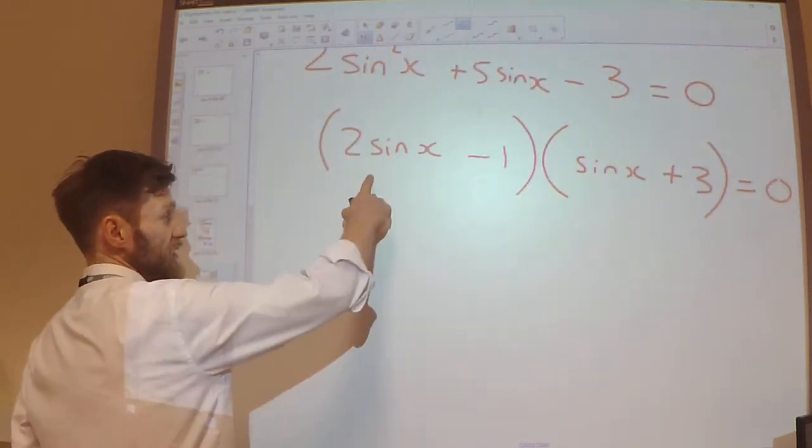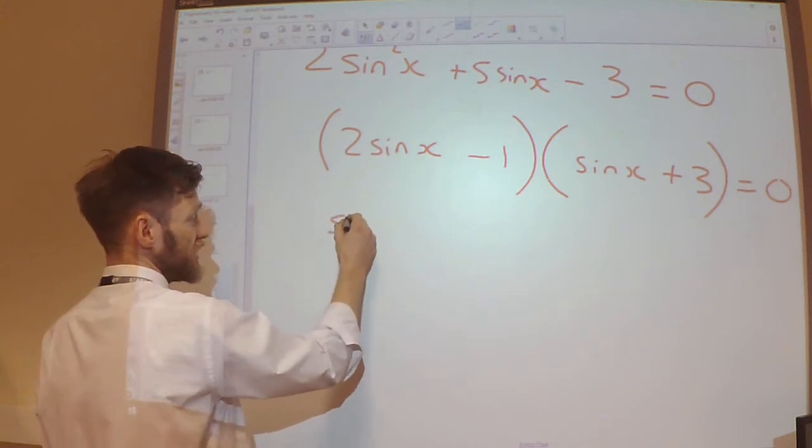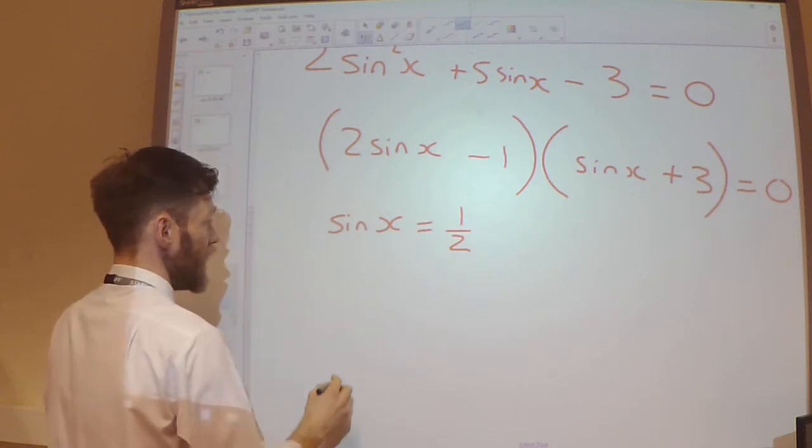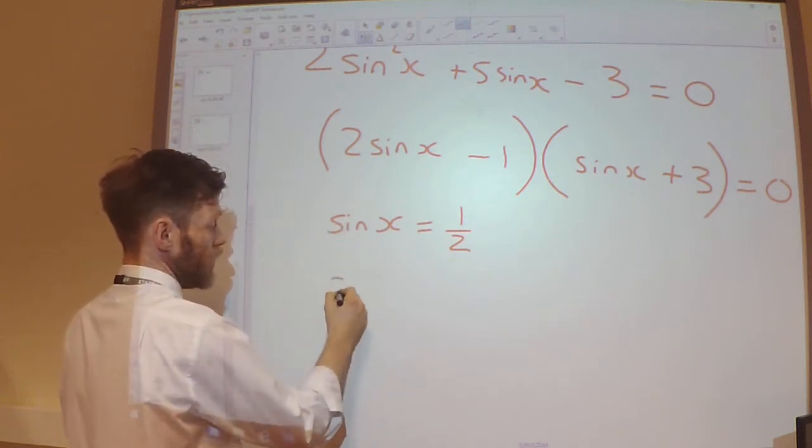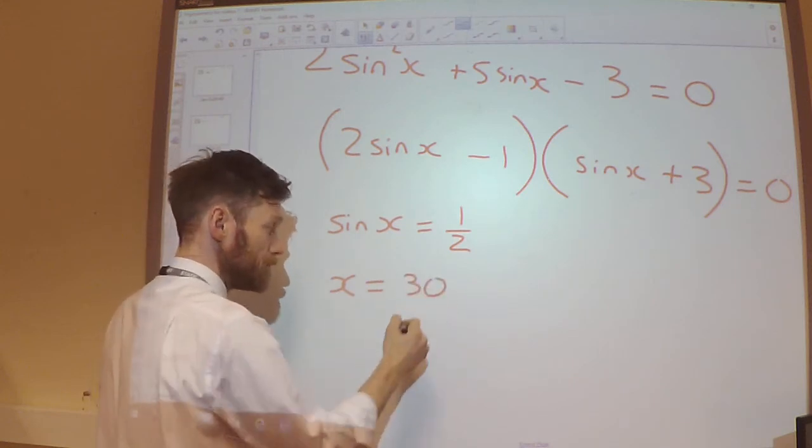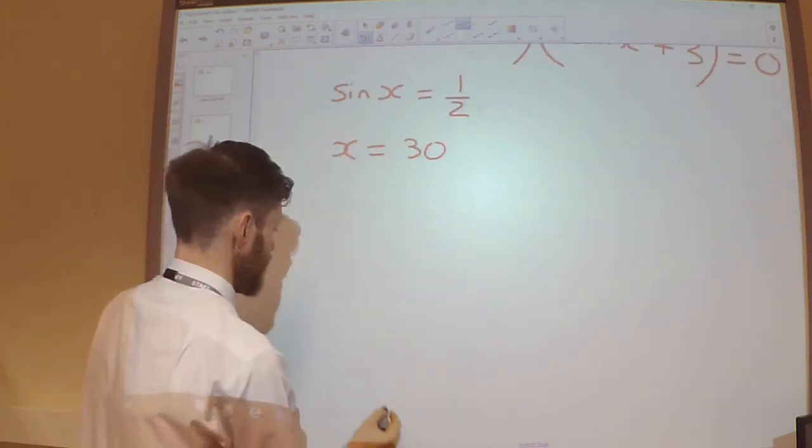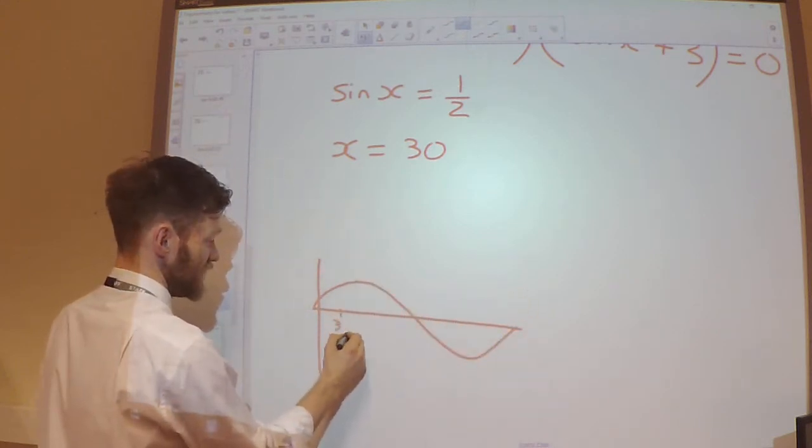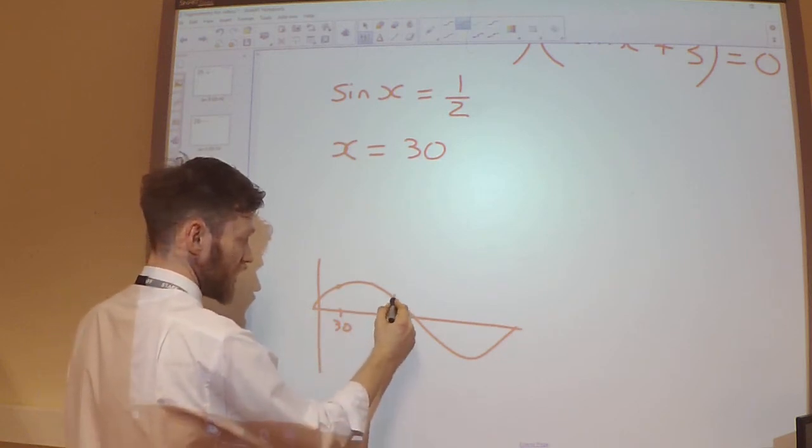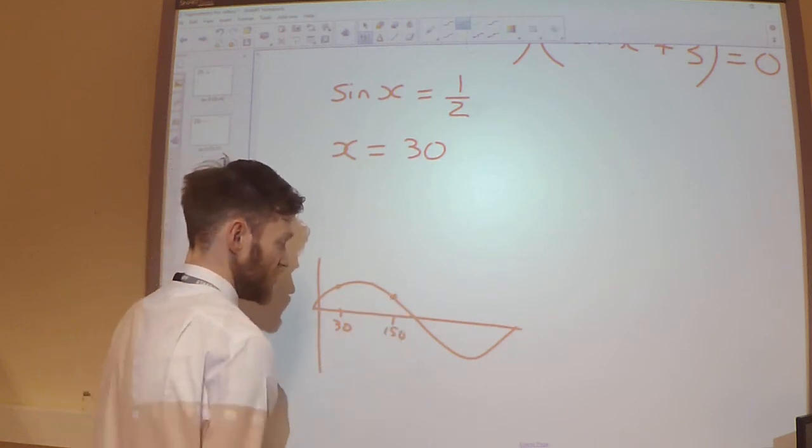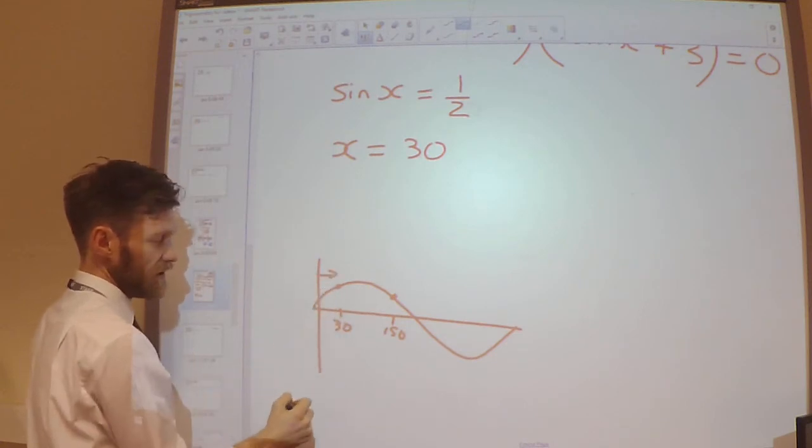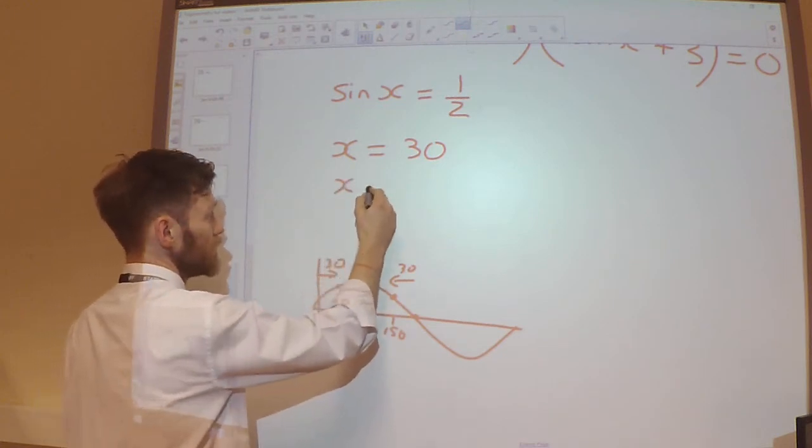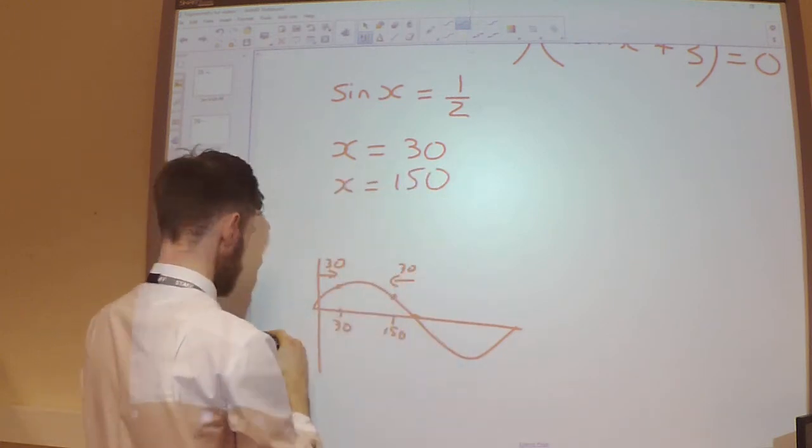Right, so either this is 0. So this is going to be 0 when sin x is 1 half. So that's going to be where x is 30 degrees. And I know from my sine graph that 30 degrees here is the same as 150 degrees there. Because if it's 30 degrees from 0, it's going to be 30 degrees from 180.